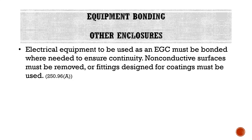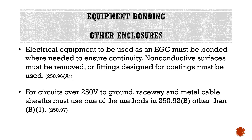Aside from service enclosures, we're going to talk about other enclosures. Electrical equipment to be used as an equipment grounding conductor must be bonded where needed to ensure continuity. Non-conductive surfaces must be removed or fittings designed for coatings must be used. For circuits over 250 volts to ground, raceway and metal cable sheaths must use one of the methods in 250.92B, other than B1.